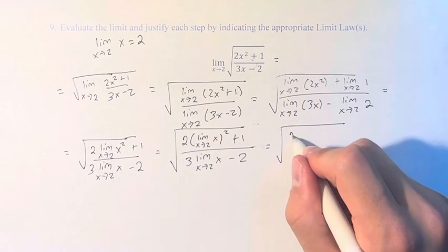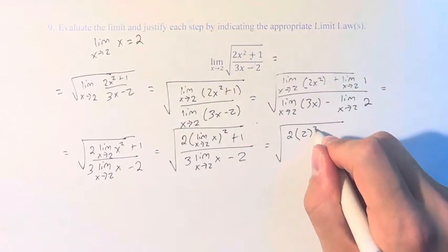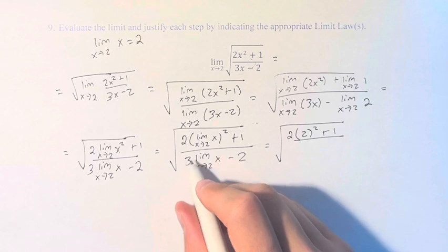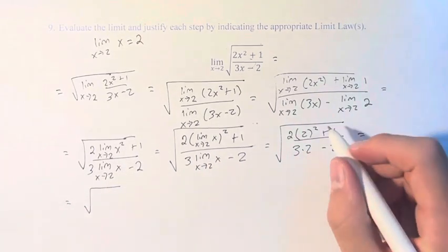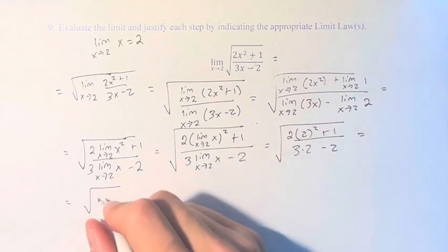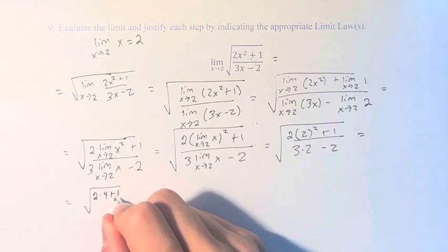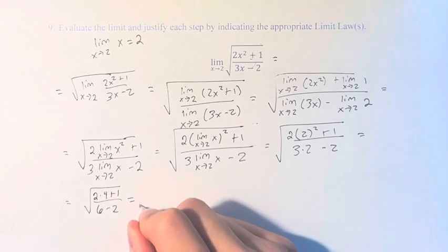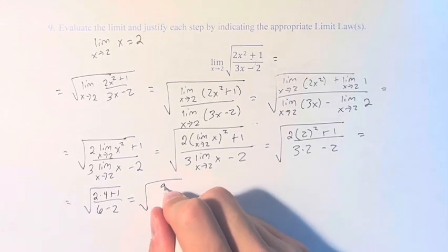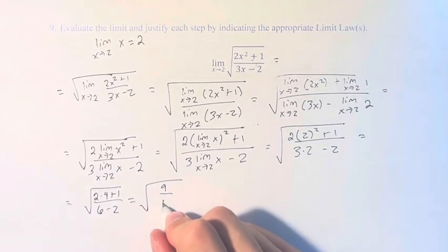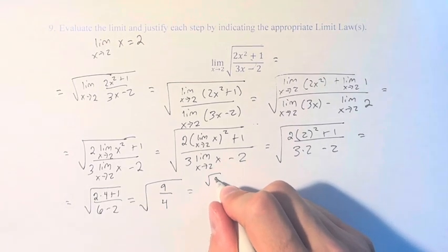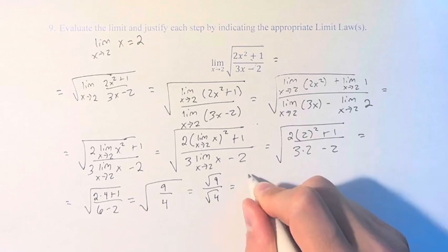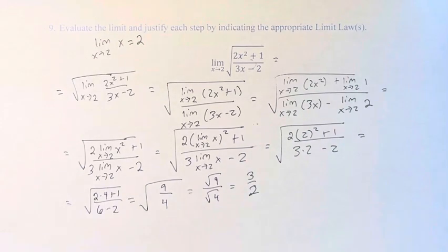So this is 2 times, we know that this is equal to 2 squared plus 1 over 3 times 2 minus 2. So this is 8 plus 1 is 9 over 6 minus 2 is 4. So this is the square root of 9 over 4, which is equal to the square root of 9 over the square root of 4, which is equal to 3 over 2. So this limit is equal to 3 over 2.